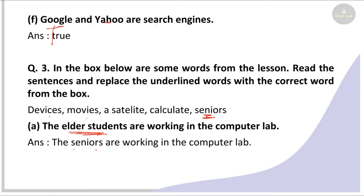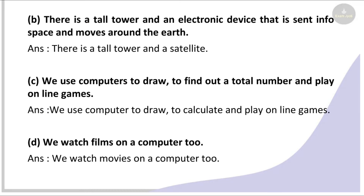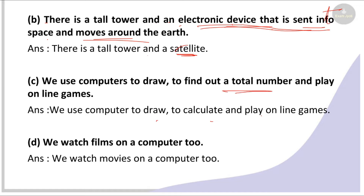It is the electronic device that is sent into space and moves around the Earth — that is a satellite. We use computers to draw and to find out a total number and play online games — replace 'find out a total number' with 'calculate.' We watch films on a computer too — replace 'films' with 'movies.' So: we watch movies on a computer too.